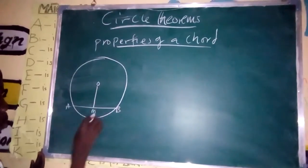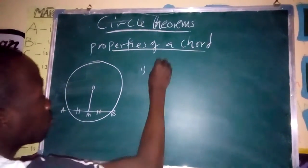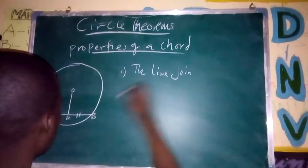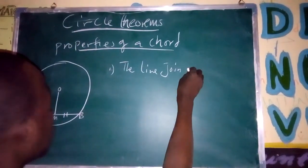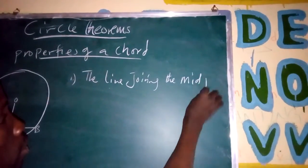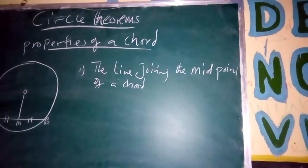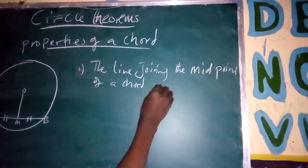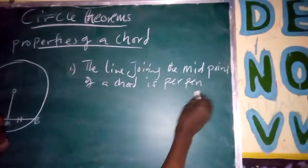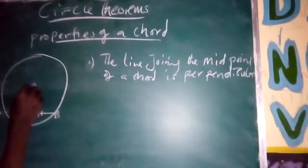This is the midpoint. We have something like this. The line joining the midpoint of the chord is perpendicular. The line joining the midpoint of the chord, perpendicular from the center.